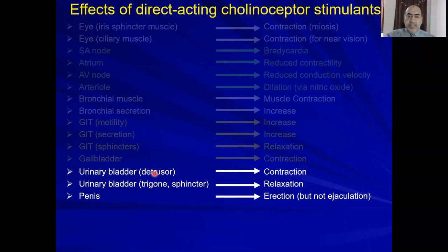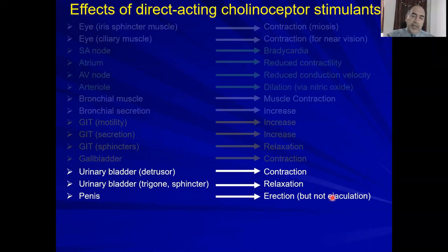On the urinary bladder, muscarinic stimulation causes contraction of the detrusor muscle and relaxation of the trigone and sphincter, allowing micturition — urination. On the male sex organ, it causes erection — not ejaculation, because ejaculation is enhanced by the sympathetic nervous system.